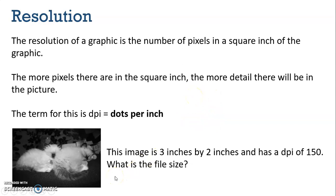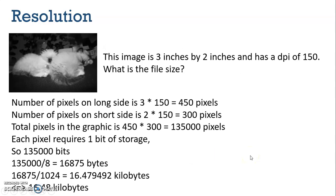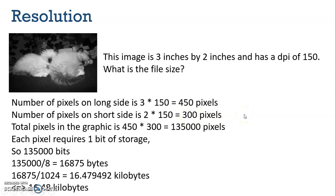If we take this graphic on the bottom left — it is three inches by two inches and has a DPI of 150 — what is the file size? We multiply the long side, three inches, by the DPI of 150, which gives us 450 pixels. On the short side, two inches multiplied by 150 DPI gives us 300 pixels. So the total pixels in this graphic is 450 multiplied by 300, which gives us 135,000 pixels.